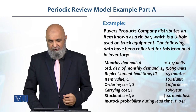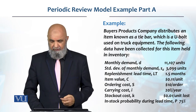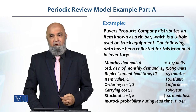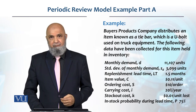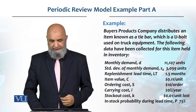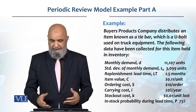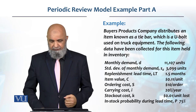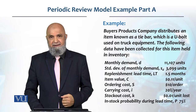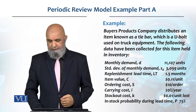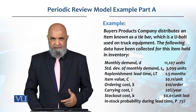Ordering cost is $10 per order. Inventory carrying cost is 20 percent per year — 20 percent of the unit cost. Stock-out cost (k) is $0.01 per unit loss.